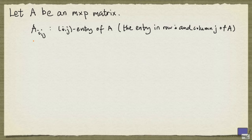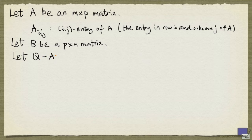We now look at a quick way to get the ij entry of a product without having to first compute the entire product. So let B be a P by n matrix, and we'll let Q denote the product AB. We're interested in finding the ij entry of Q.